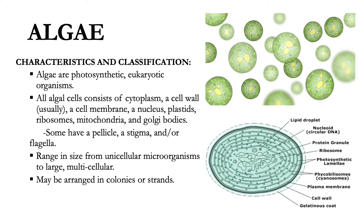Algal cells are not plants, but they are more plant-like than protozoa. Algae do not have true roots, stems, and leaves. They range in size from small unicellular microscopic organisms — for example, diatoms and dinoflagellates — to large multicellular plant-like seaweeds.